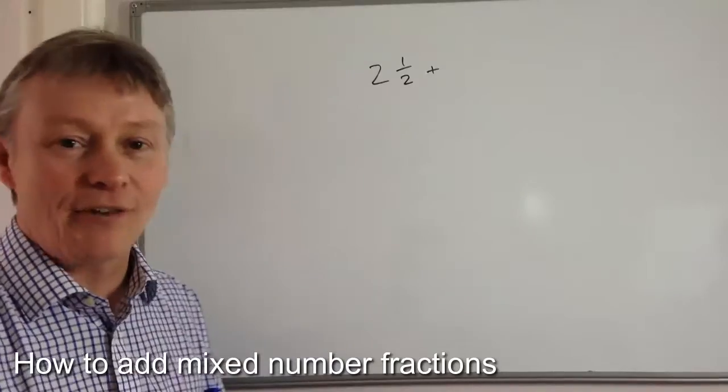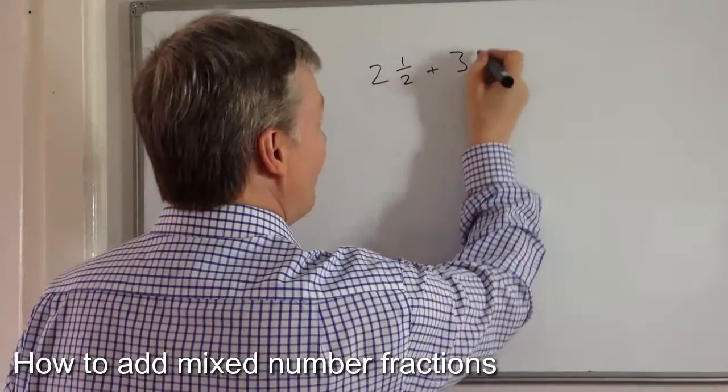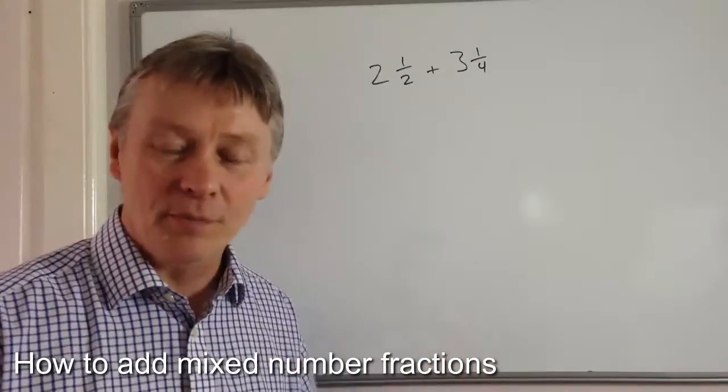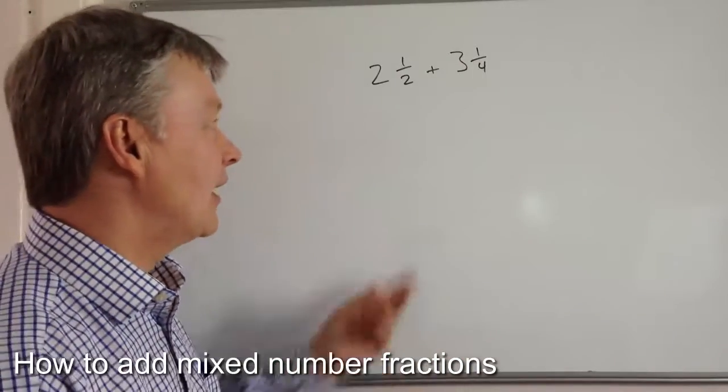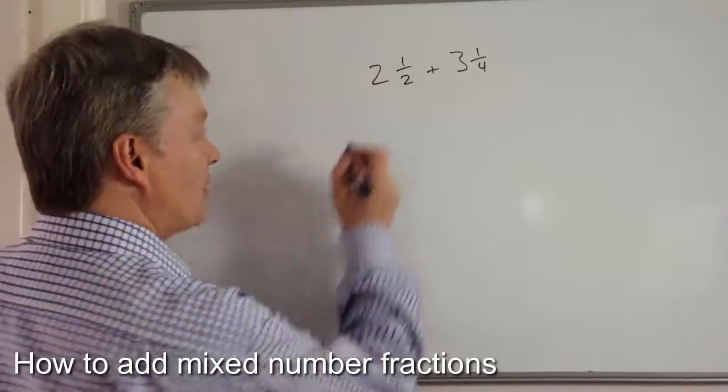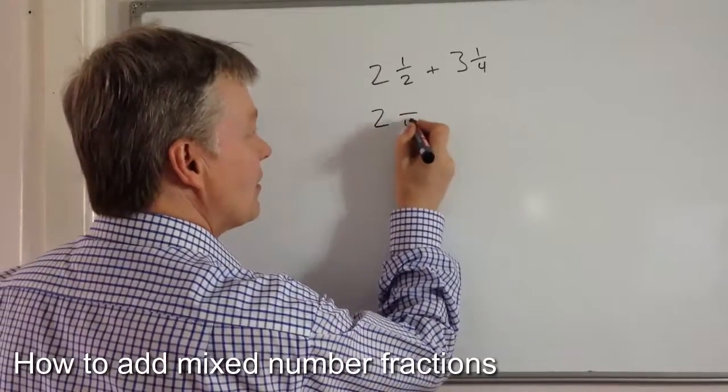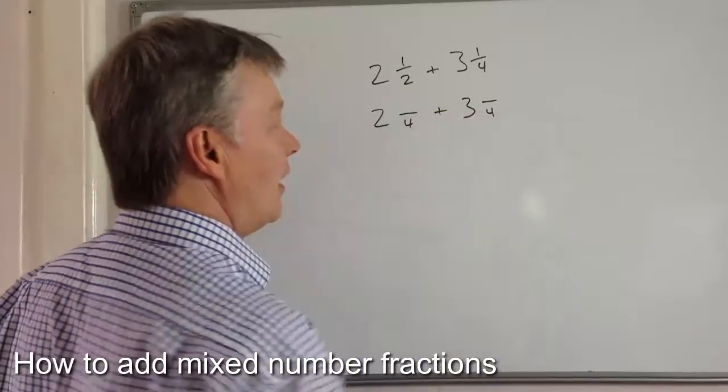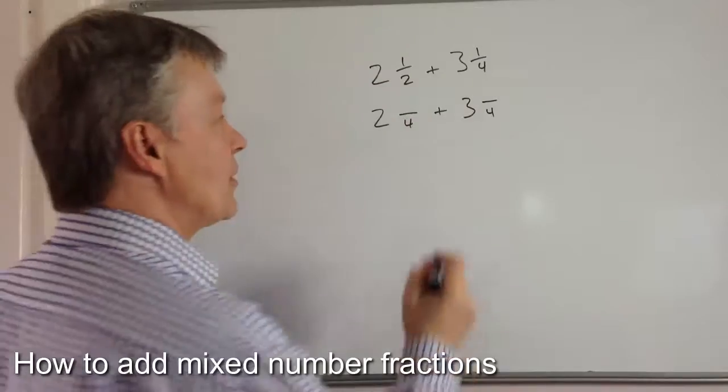I've got something like two and a half, I'm going to add that to three and one quarter. Well one of the principles we've been talking about quite a bit is to make sure that these are equivalent fractions. So what I'm going to do is I'm going to rewrite this like this. I've chosen the bottom number to be four.